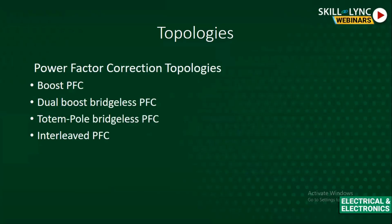Power factor correction (PFC) refers to the quality of power — the useful power delivered while neglecting reactive power. PFC topologies include: boost PFC, dual boost bridgeless PFC, totem-pole bridgeless PFC, and interleaved PFC. If the power factor for a household or industry is greater than 0.85, the quality of power is higher and useful power is maximized. PFC therefore has high priority and a lot of scope in industrial applications.